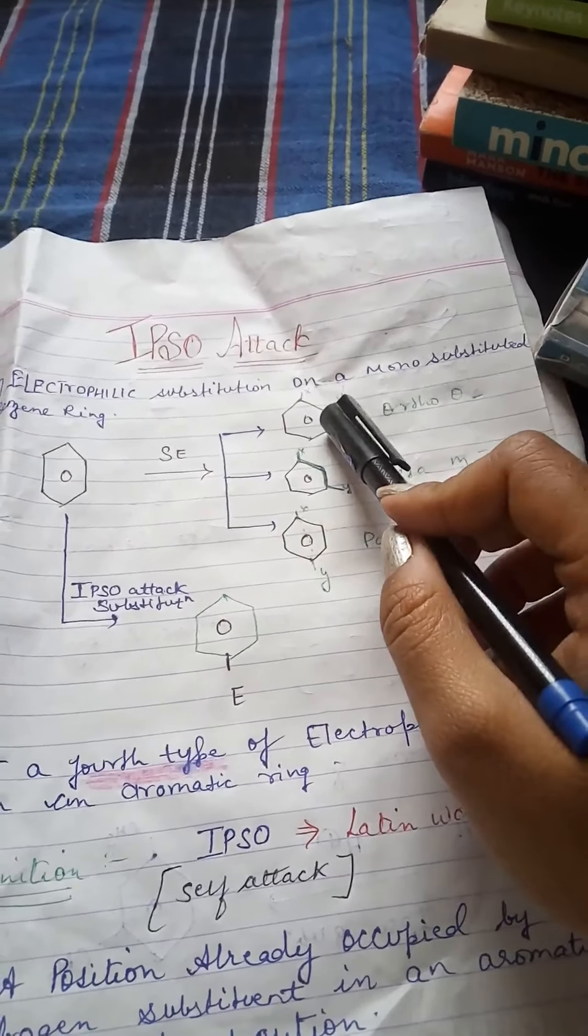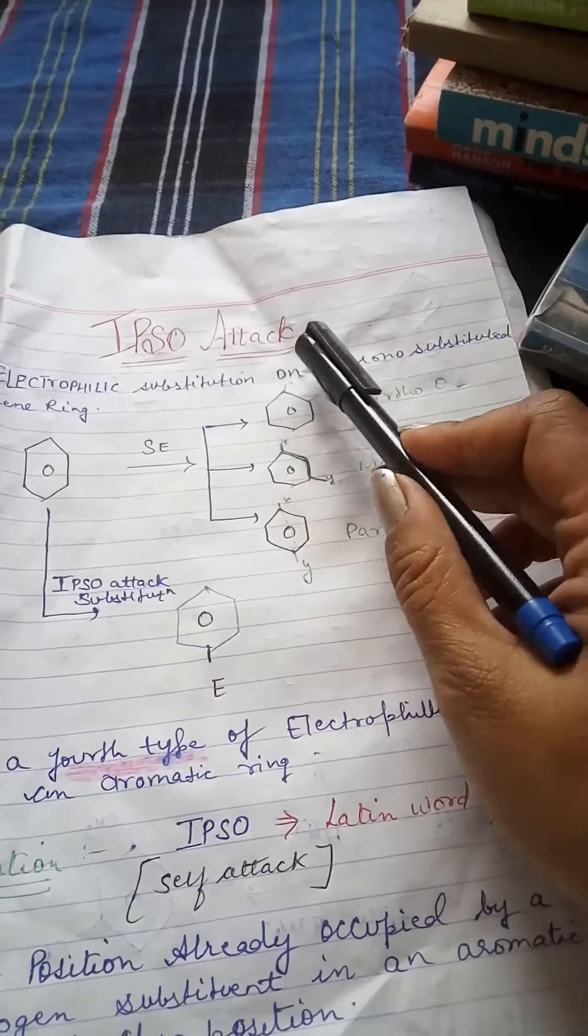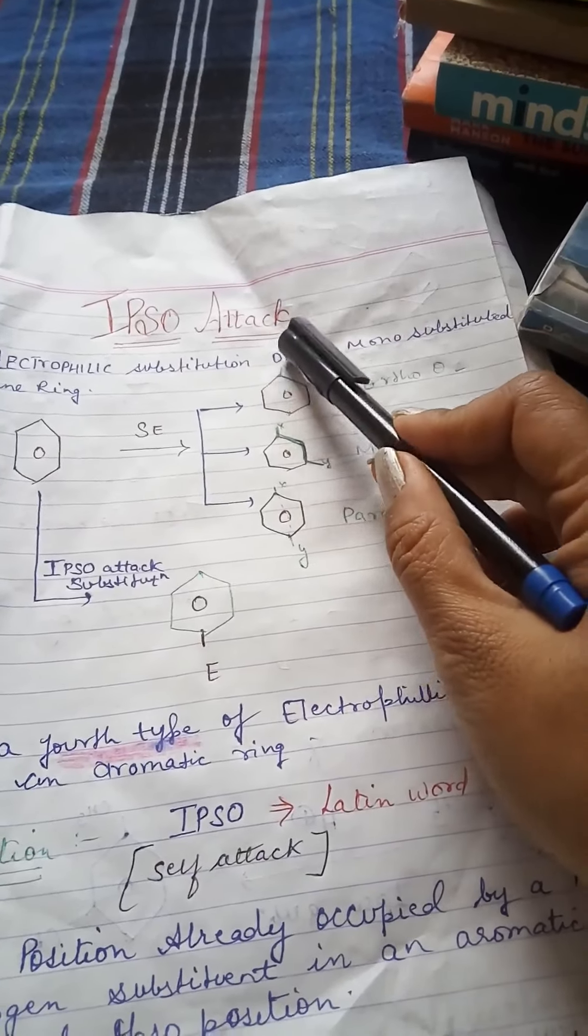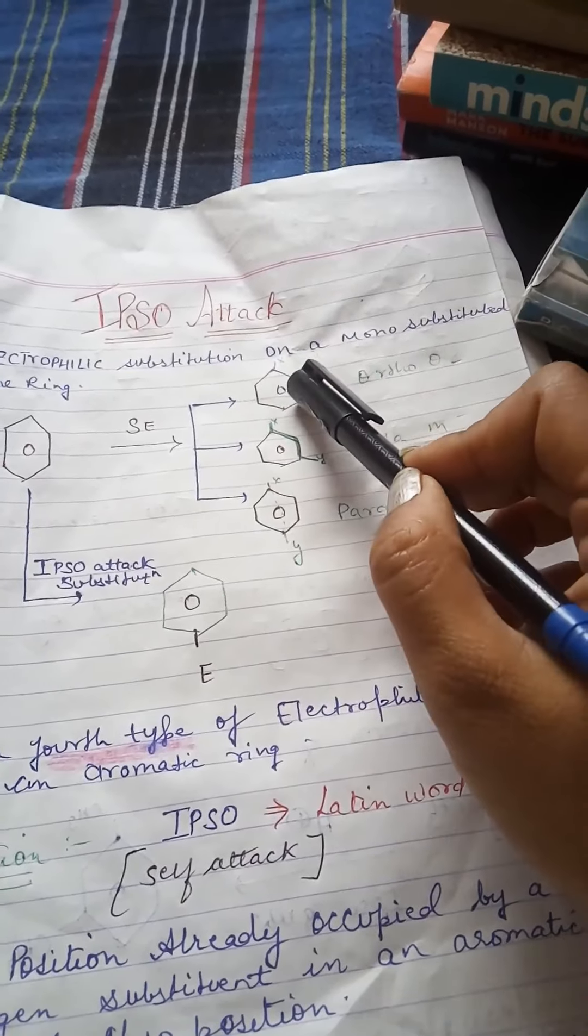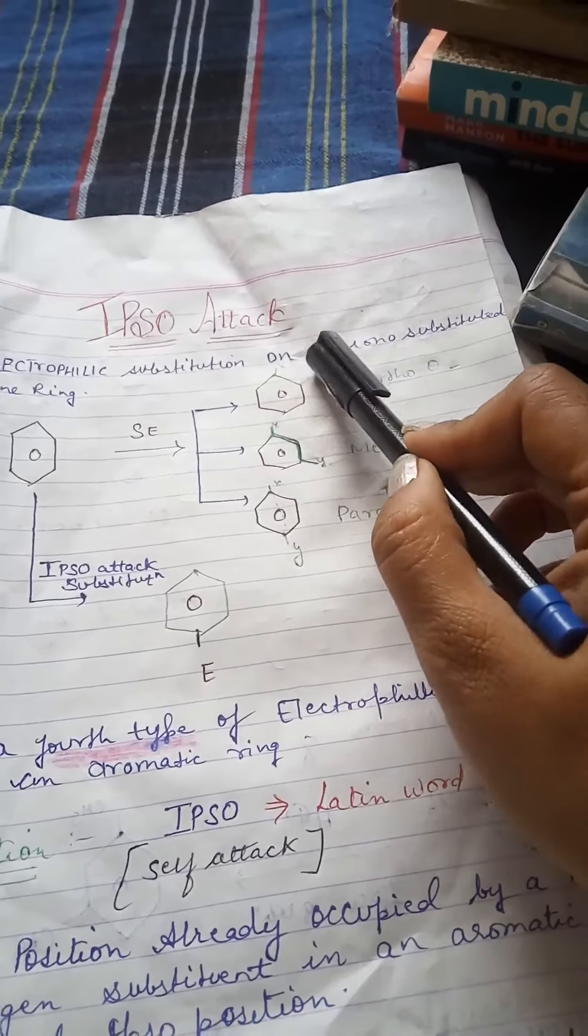First, ortho. Let's see that ortho position is 1 or 2. This is O form. If we join this, this is O form.